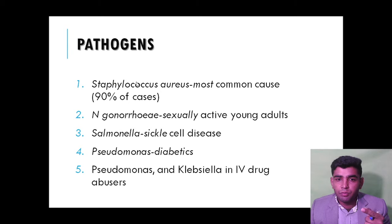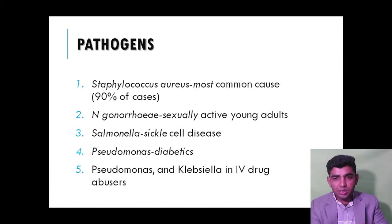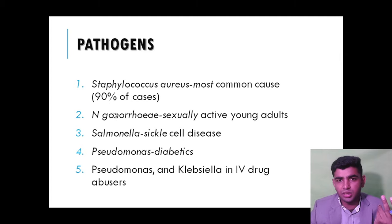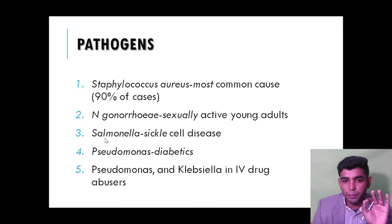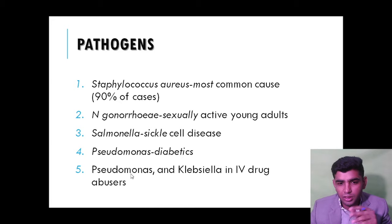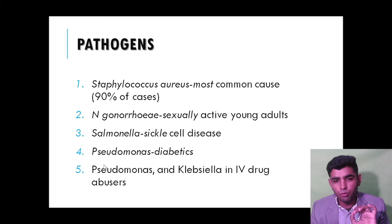The main pathogens: first, Staphylococcus aureus — the most common, accounting for 90% of cases, as it is present on the skin and enters through skin infection. Neisseria gonorrhoeae in sexually active young adults. Salmonella is most important in sickle cell disease patients. In our case the patient is diabetic, so we move toward Pseudomonas. IV drug users also present with Pseudomonas and Klebsiella.